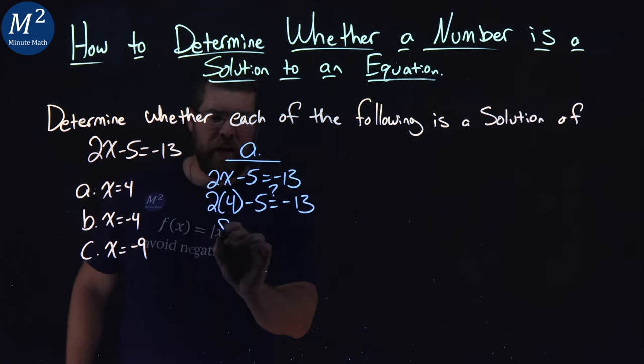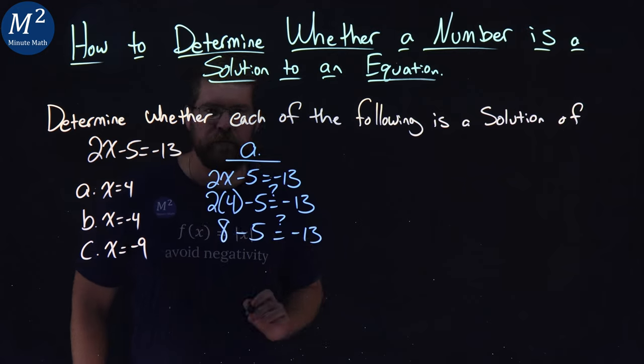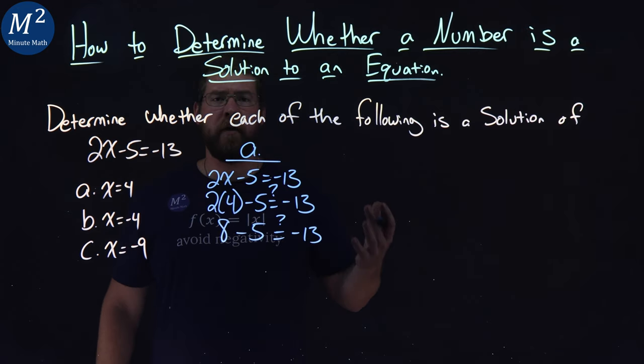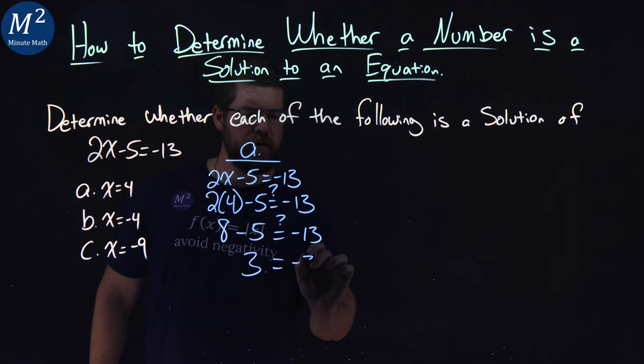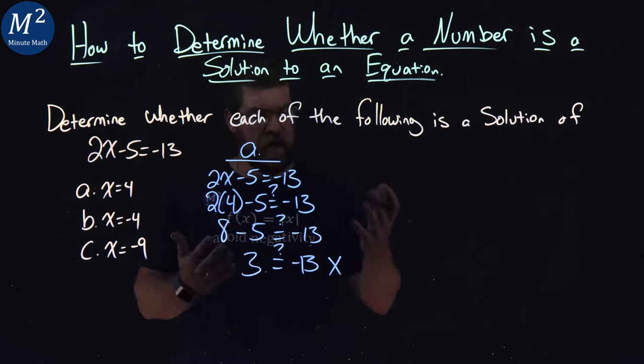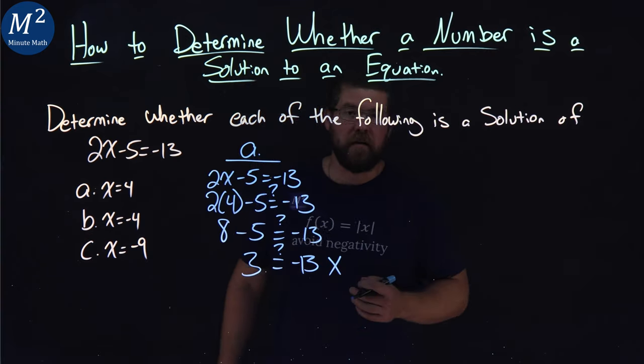2 times 4 comes first, and we have 8 minus 5 equals negative 13. Well, what's 8 minus 5? That is 3. 3 equals negative 13. The answer is no. 3 does not equal negative 13, and so x equals 4 is not a solution.